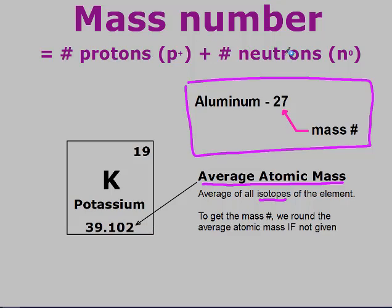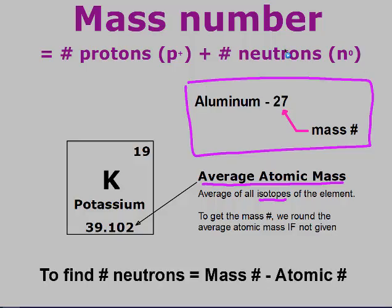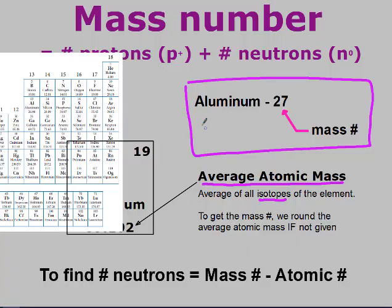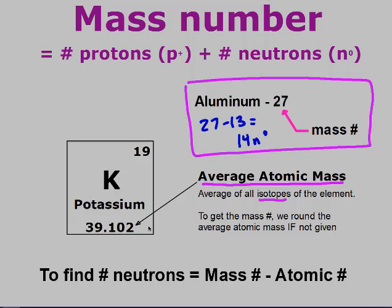Since mass number equals protons plus neutrons, to find the number of neutrons you do: mass number minus atomic number. For aluminum-27, the atomic number is 13, so 27 minus 13 gives 14 neutrons. For potassium, since no mass number was given, we use a rounded mass number of 39; 39 minus the atomic number of 19 gives 20 neutrons.